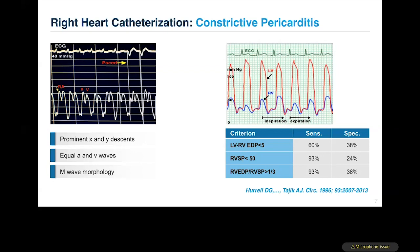Knowledge about the pathophysiology and hemodynamic changes with constriction helps us understand how the pericardium, by altering deformation of cardiac chambers, leads to systemic venous congestion. You see prominent X and Y descents in the jugular venous waveform, equalization of A and V waves, and this characteristic pattern with rapid descents and highly elevated jugular venous pressures.